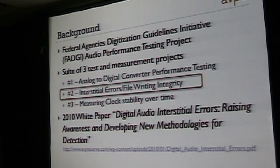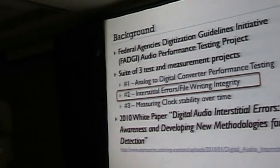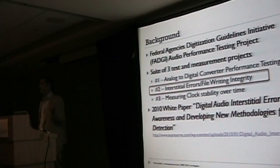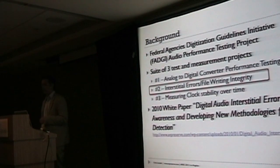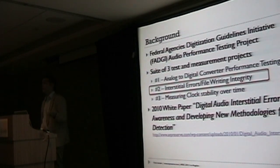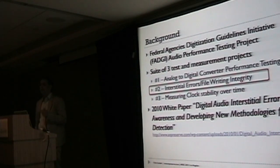That work led to some parallel tracks continuing within the Federal Agencies Group, but also doing some work on our own at AVPS and getting involved with other folks, too, trying to continue the research and development efforts. Part of that work led to a 2010 white paper published on digital audio interstitial errors, which was good because it led to getting a lot of feedback from others in the community. After publishing the paper, a lot of people came and said, yeah, this is a problem I've been having too — or we investigated after we read the paper and found that we actually have a lot of these issues. So while that's not good in one sense, it was good to recognize that this is a real issue that needs to be addressed.